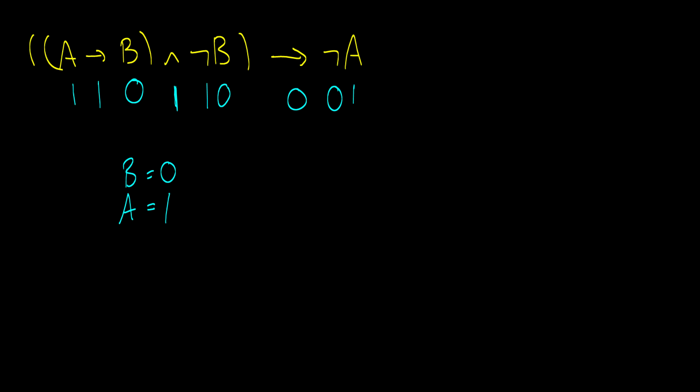But hold on a second. Then that means that that should be false. Because the arrow isn't true when A is true and B is false. So again we have another contradiction here right there. So therefore it is a tautology. And it is a tautology because there is no possible assignment where this is true. Where the whole sentence is false.